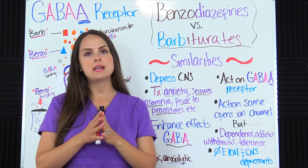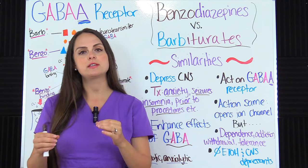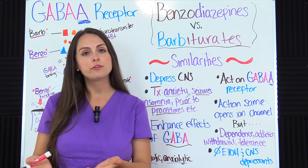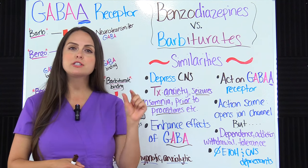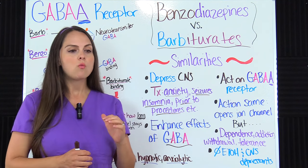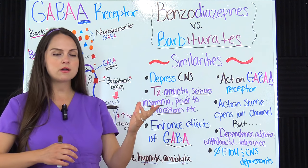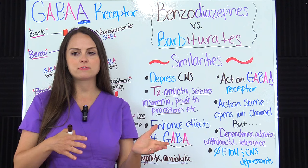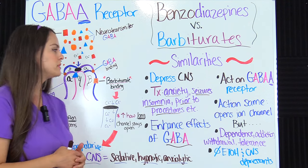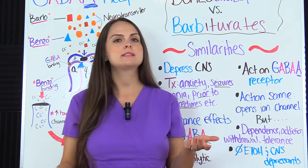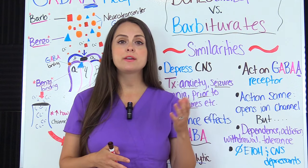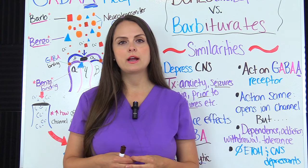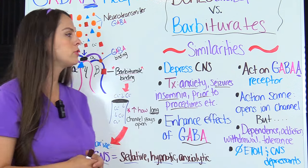Since benzos came onto the scene they tend to be a little bit safer, because with barbiturates there's a risk of accidental overdose. Barbiturates have a very small therapeutic index — a small threshold between the therapeutic dose and the toxic dose — so there were a lot of accidental overdoses. There is a risk of overdose with benzos as well, but there is a lower risk compared to barbiturates.